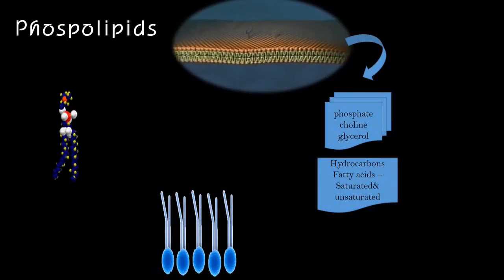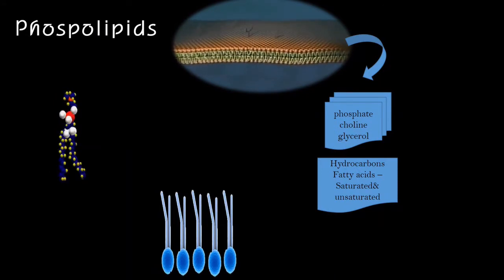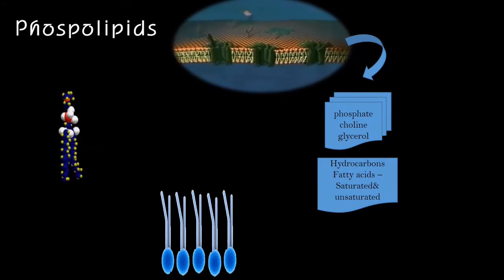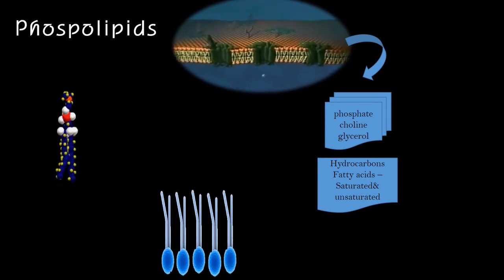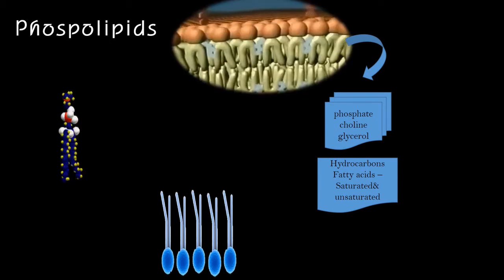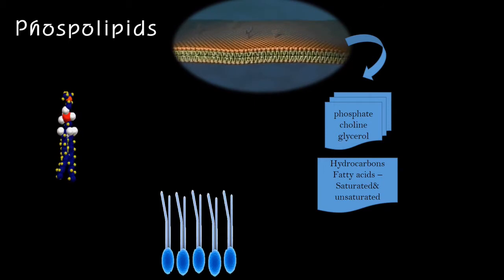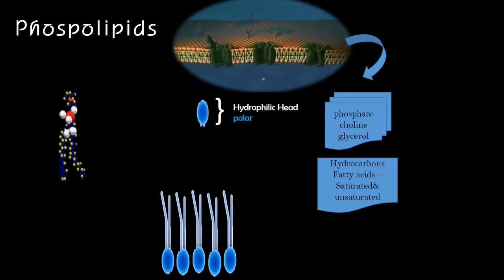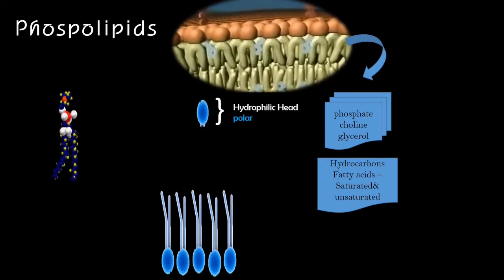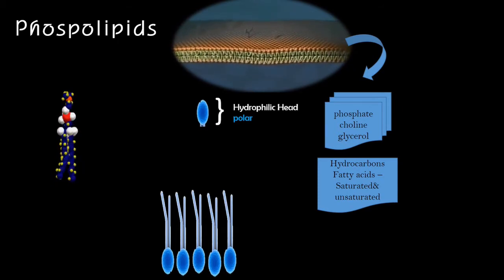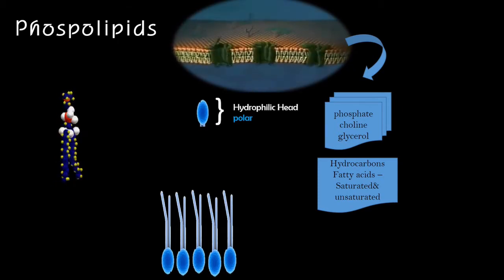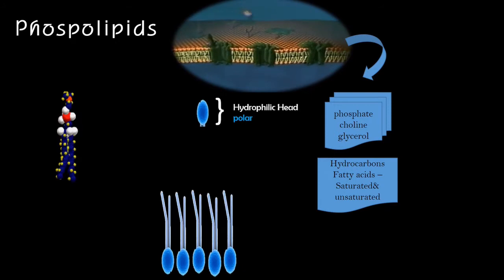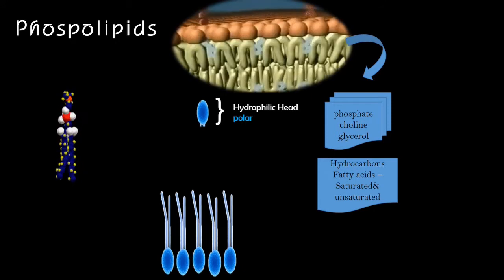The phospholipid is a major macromolecule that primarily consists of fats, further made from carbon and hydrogen. The phospholipid has two parts: the hydrophilic polar head, meaning it is a negatively charged molecule that is water-loving and internally and externally directed.